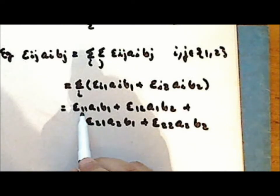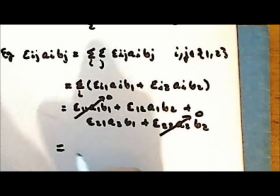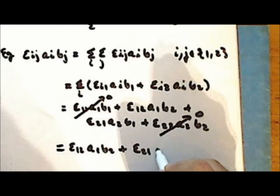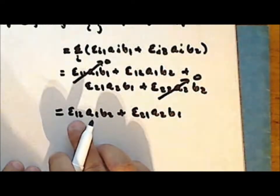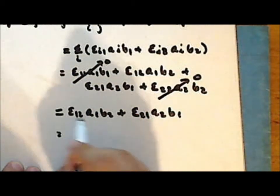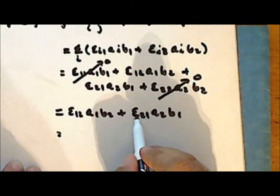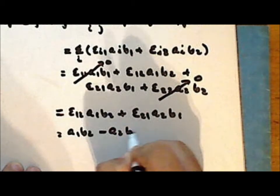In this sum, the value of the permutation symbol is 0 when we have a repeated index value, so the terms epsilon sub 1,1 and epsilon sub 2,2 are both 0. The sum simplifies to epsilon sub 1,2 times A1 times B2, plus epsilon sub 2,1 times A2 times B1. Since 1,2 is an even permutation, epsilon sub 1,2 equals +1 and epsilon sub 2,1 equals negative 1, giving us A1 B2 minus A2 B1.